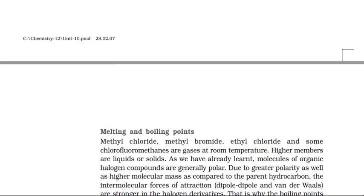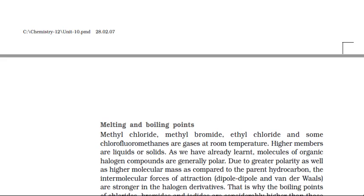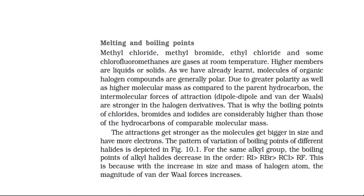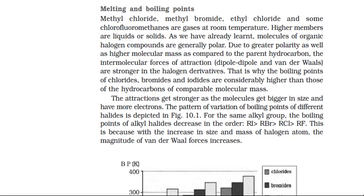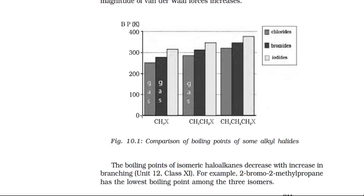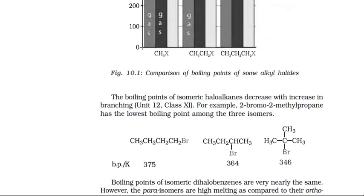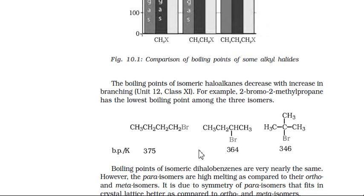As discussed in Class 11, as molecular mass increases, melting point and boiling point increase. As branching increases, the surface area in contact between two molecules decreases, resulting in less intermolecular forces and a decrease in boiling point. In the case of aromatic dihalo compounds, the para isomer is more symmetric so it has a higher melting point than the ortho isomer.